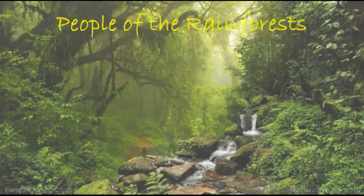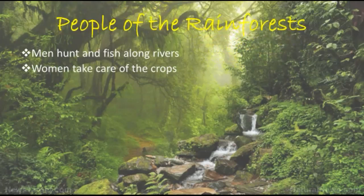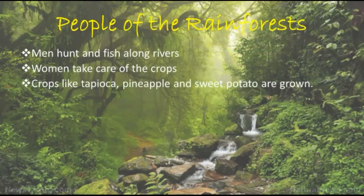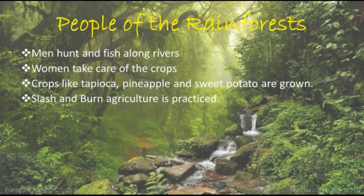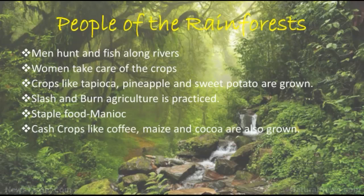The people grow their food in small areas after clearing some trees in the forest. The men hunt and fish along the river, while women take care of the crops. They mainly grow tapioca, pineapple, and sweet potato. As hunting and fishing are uncertain, the women are the ones who keep their families alive by feeding them. They practice slash and burn agriculture. Their staple food is manioc, also known as cassava, which grows underground like a potato. They also eat queen ants and egg sacs. Cash crops like coffee, maize, and cocoa are also grown here.